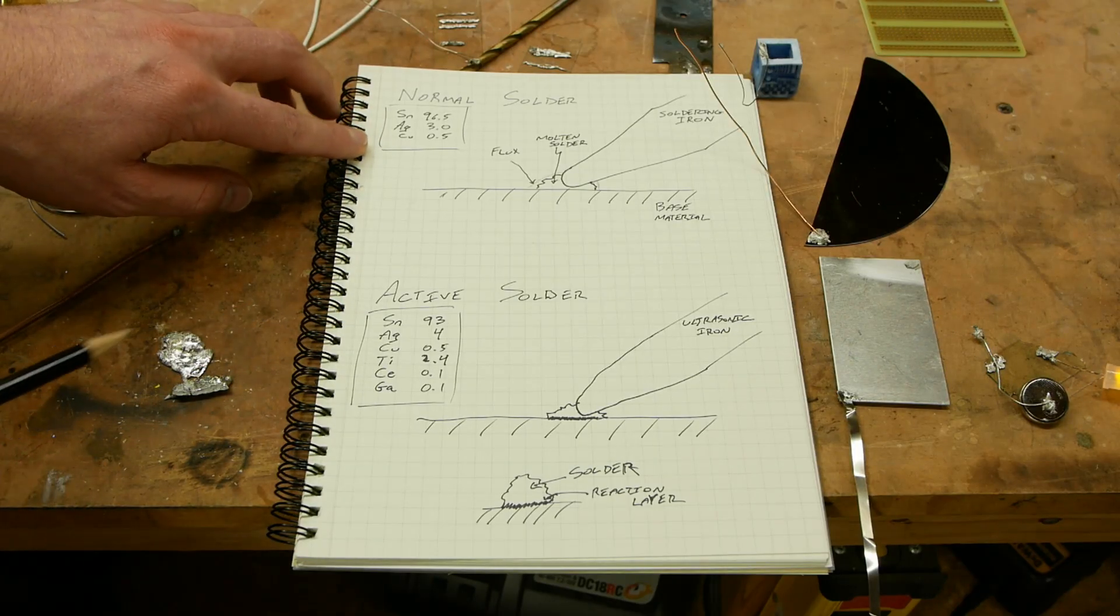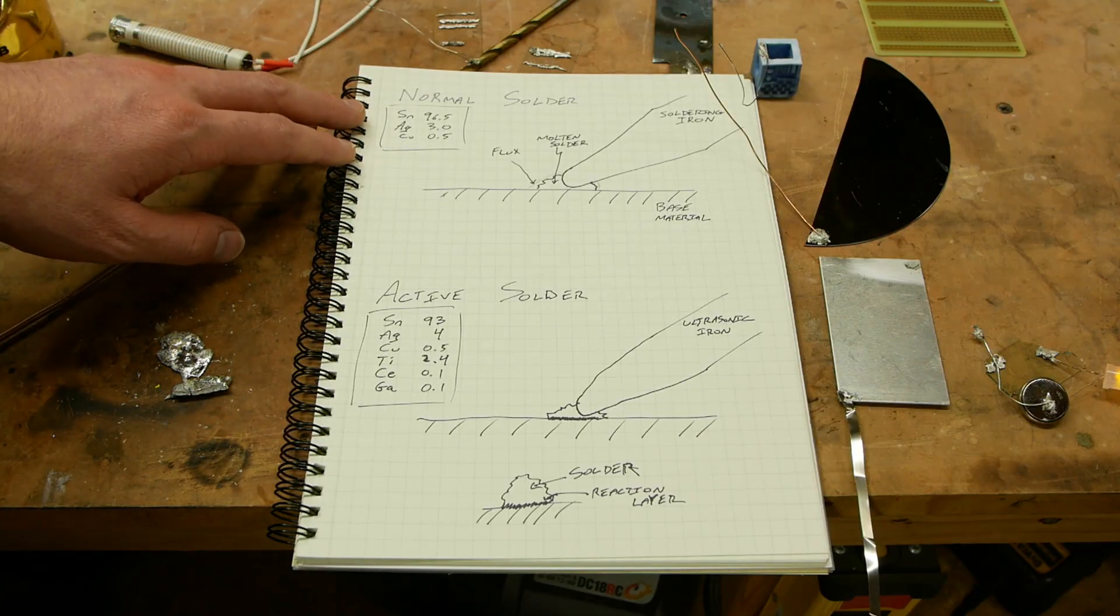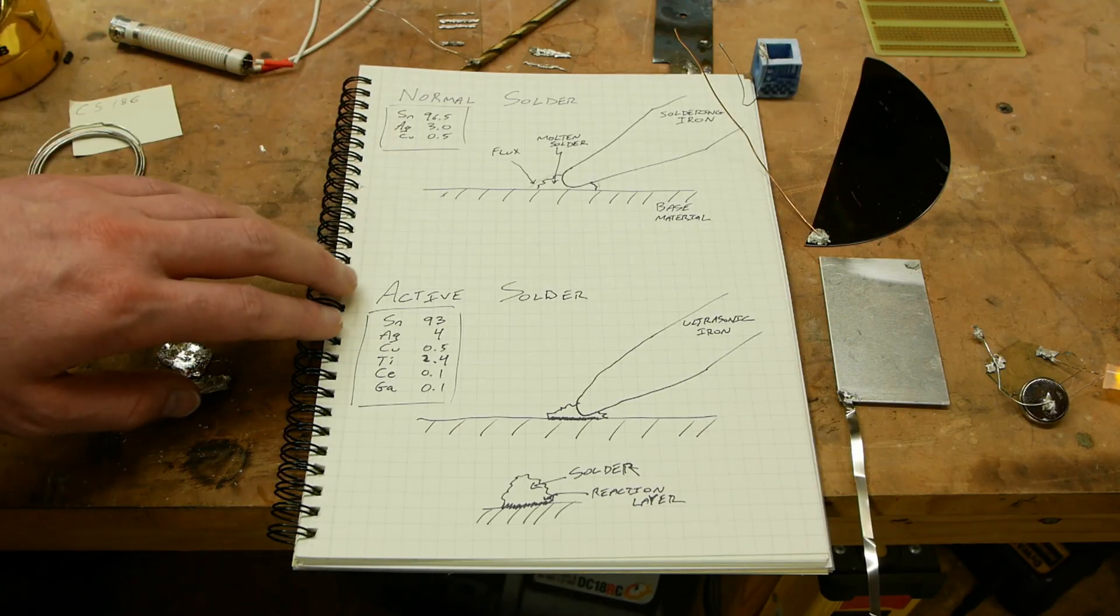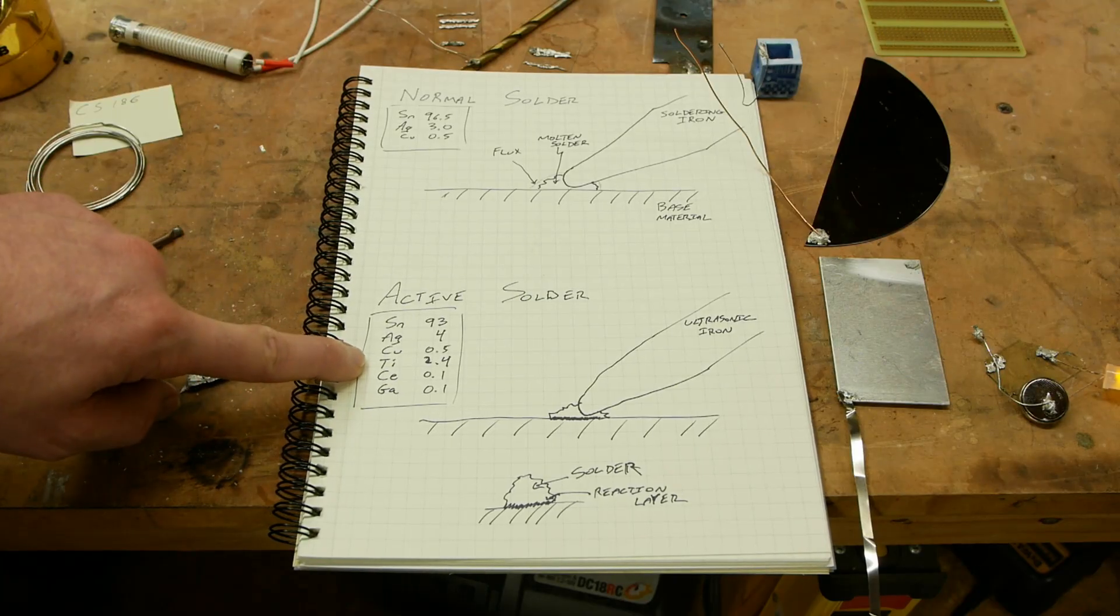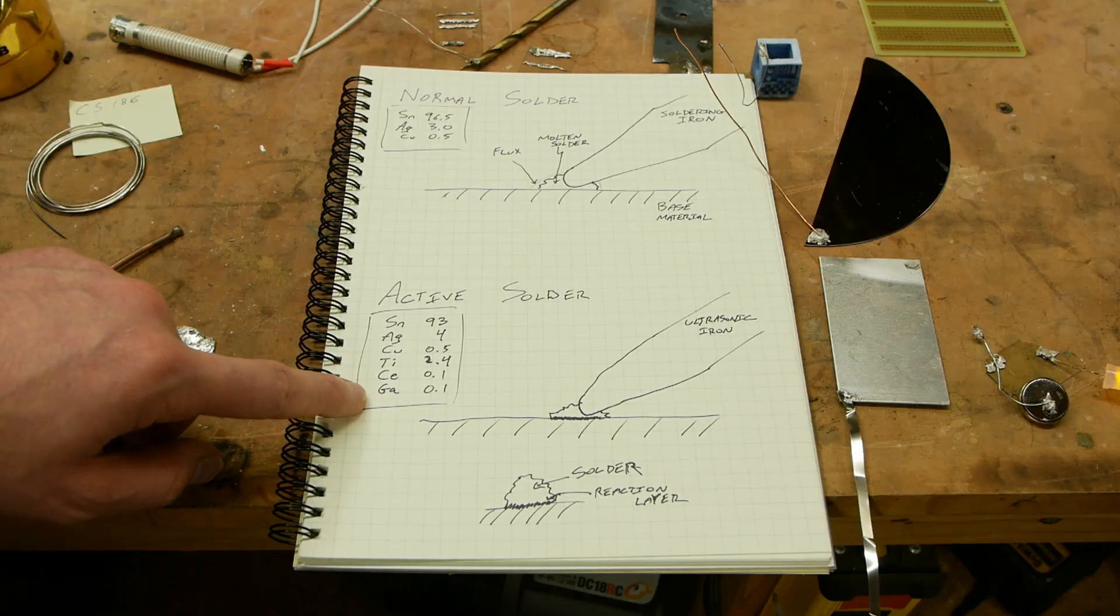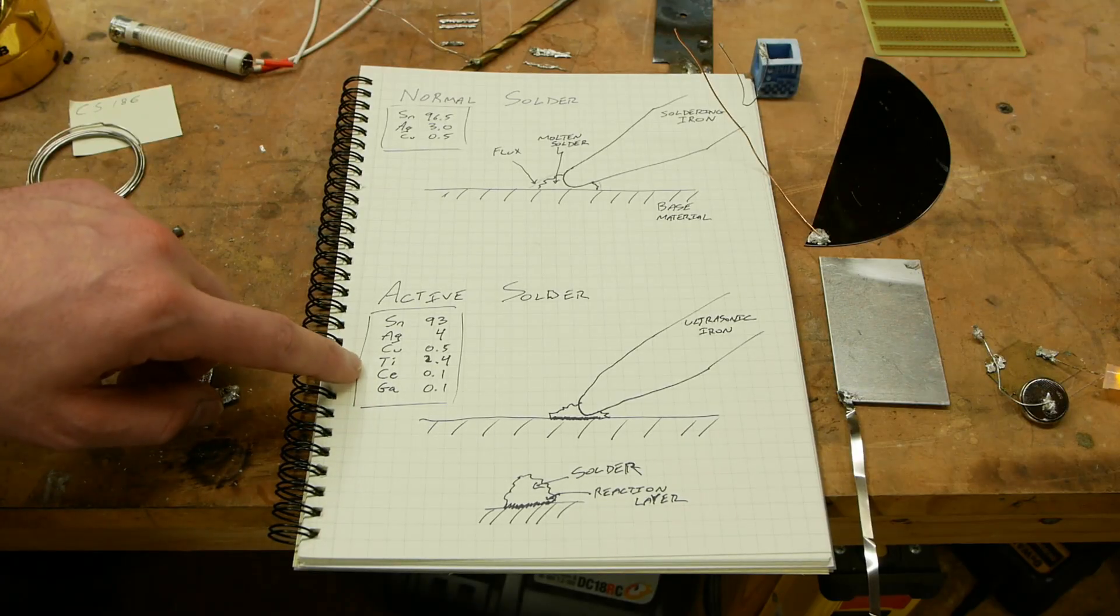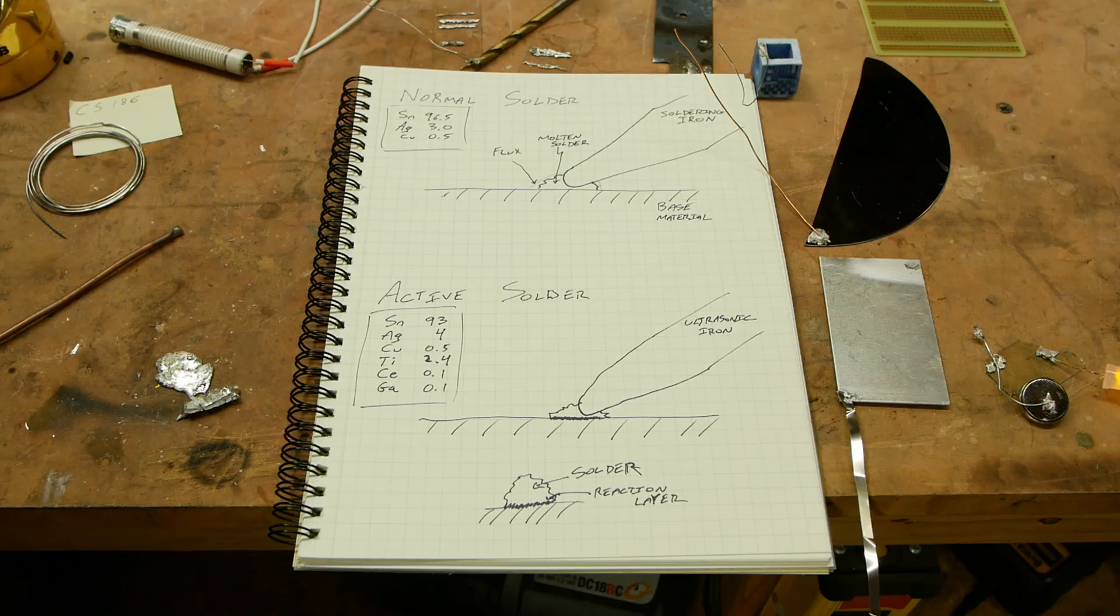So the first three ingredients are the same. Tin, silver, and copper is what's very commonly used as a lead-free solder these days, SAC. And the active solder has almost the same thing, but to it we add titanium at about a couple percent and then just a tiny amount of cerium and gallium.